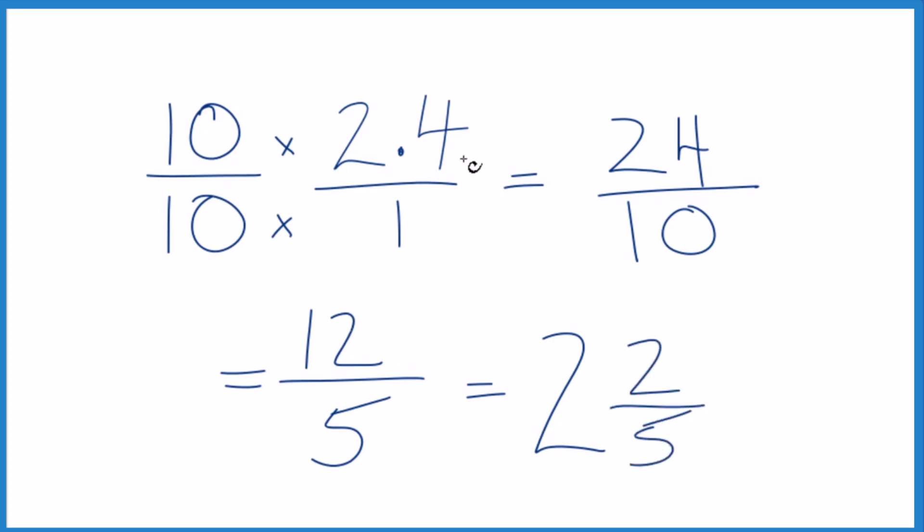Bring the 5 across, and 2.4 equals the mixed number 2 and 2 fifths. You can check that 2 times 5 is 10, 10 plus 2 gives us the 12, and we kept the 5 the same. That's it. This is Dr. B converting 2.4 to a fraction.